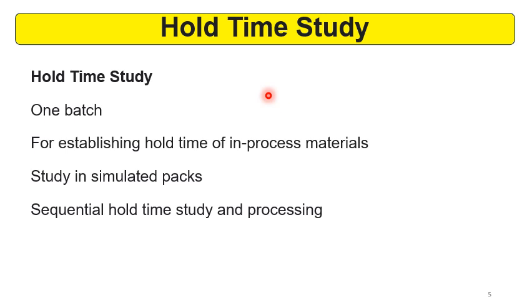Then sequential hold time study and processing is also studied. In this, the material is held for some time and then the next process is done, then that next process material is held, and the next process is done. For example, in a tablet formulation, if the blend is required to be held for compression, the lubricated blend will be held for some days or time — that may be 7 days, 15 days, 1 month, or 45 days. After that, compression will be done. After compression, the core tablet will be held and film coating will be done if applicable. So in sequential hold time study and processing, the effect of hold time on the in-process material can be studied.